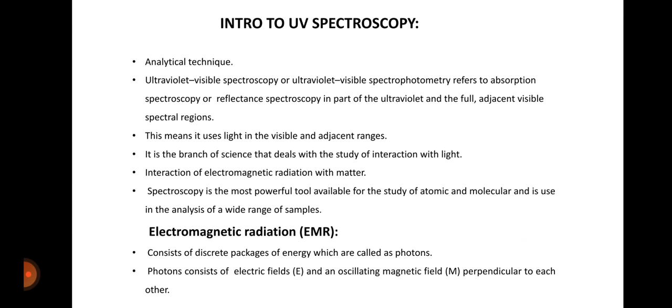What is electromagnetic radiation, which is known as EMR? It consists of discrete packages of energy which are called photons. Photons consist of electric fields and an oscillating magnetic field which are perpendicular to each other.